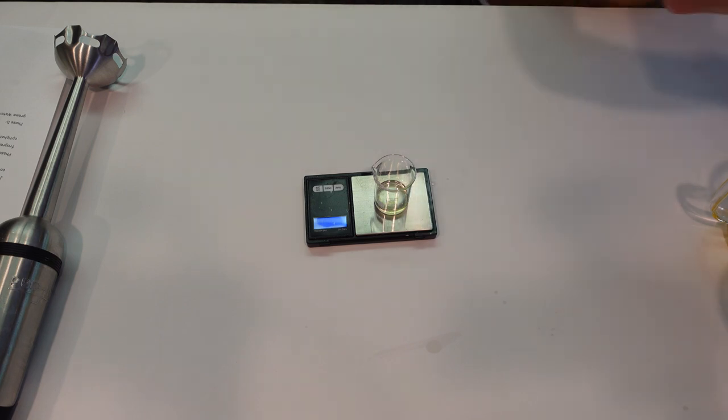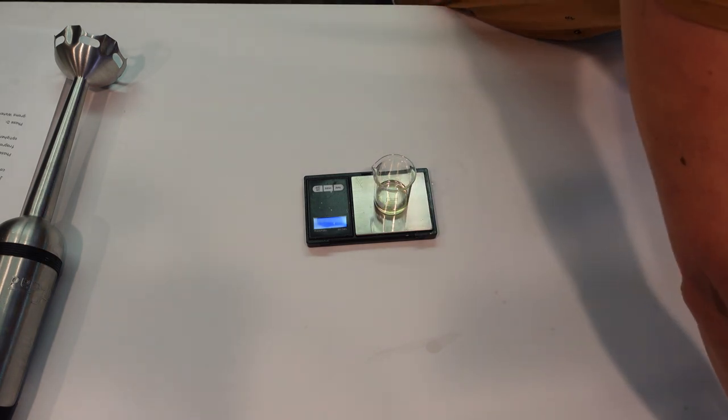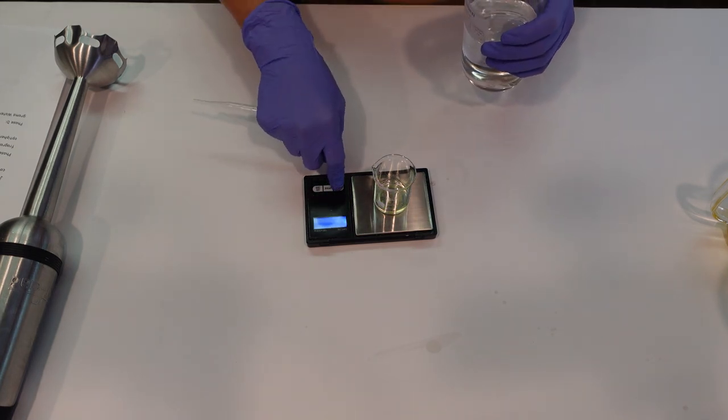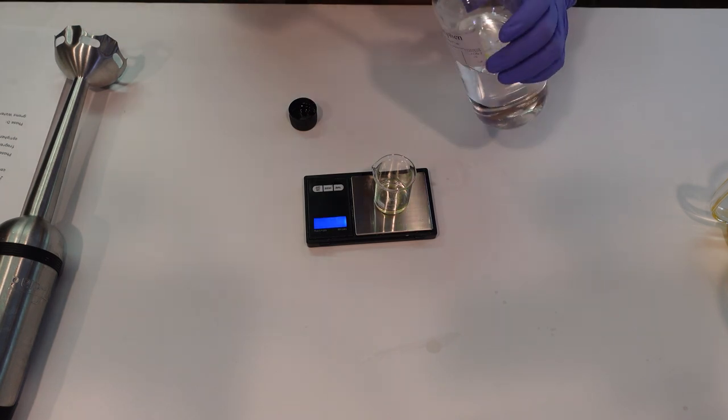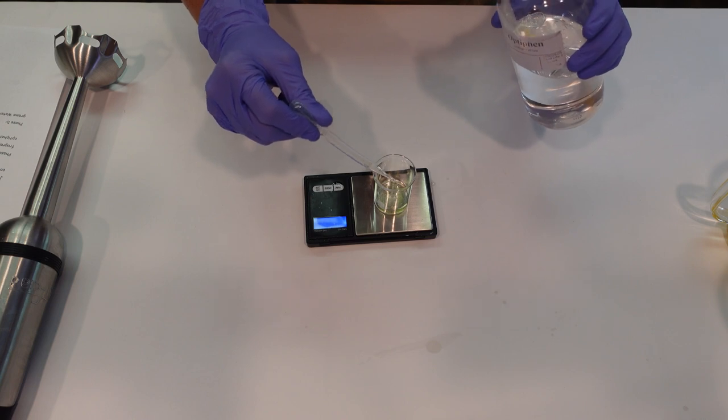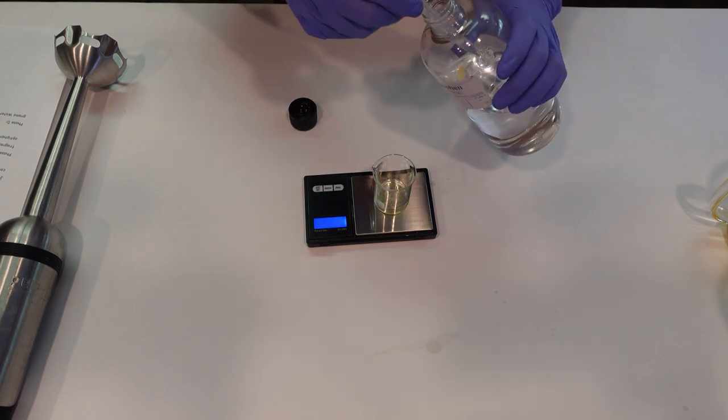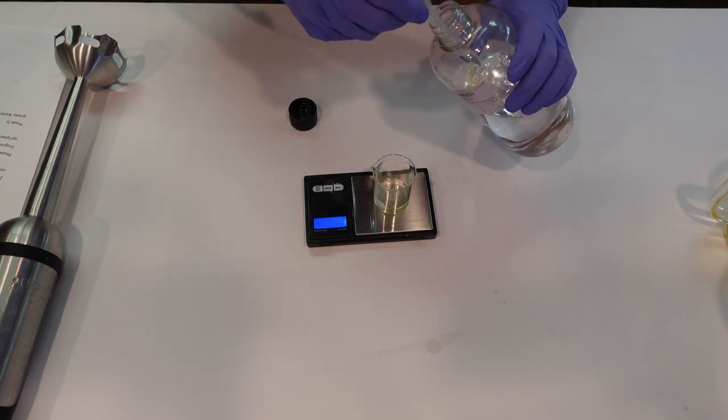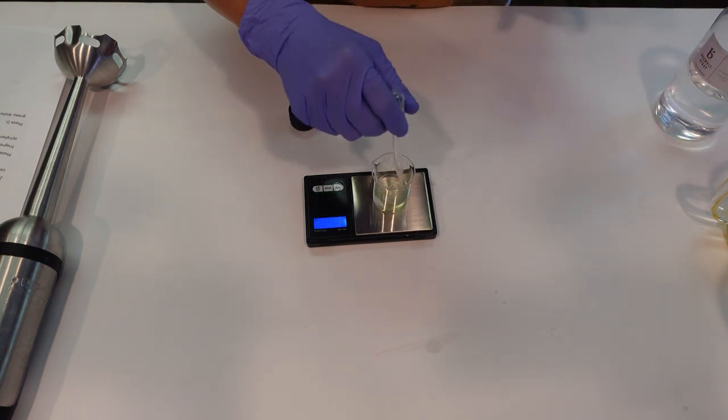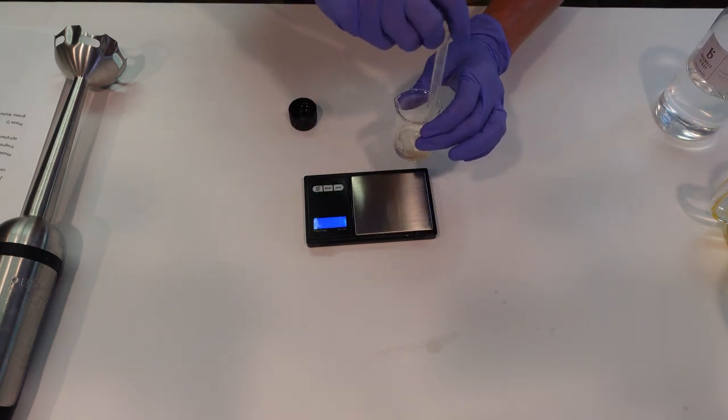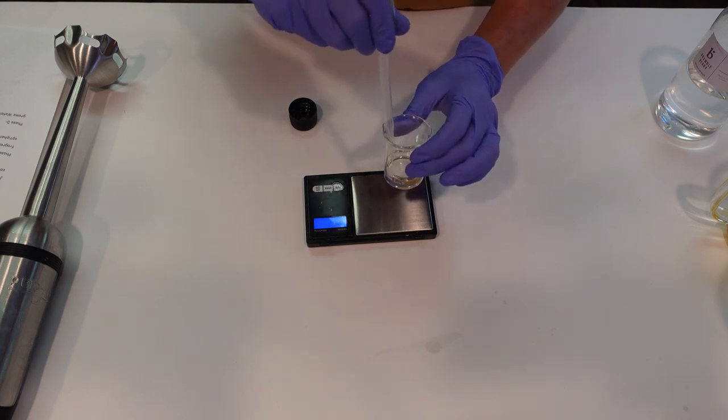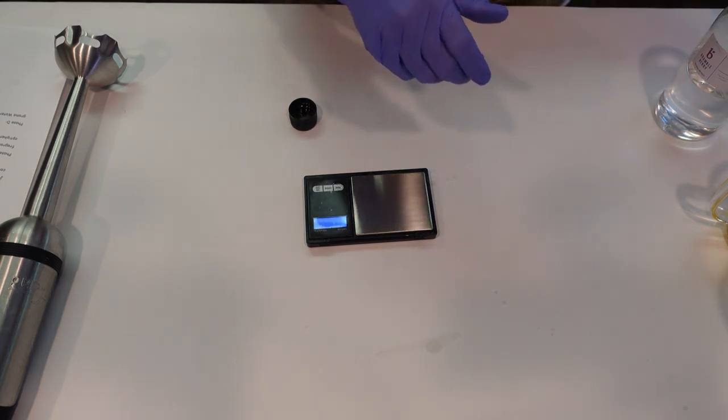To this we're going to be adding in our preservative. Now I'm using Optiphen preservative today because this does have a high oil content and Optiphen is used for formulas that have a higher oil content. I'm just mixing this in with my fragrance oils and then I'm going to give Phase C a little stir to combine. Then I'm going to set aside my Phase C ingredients.